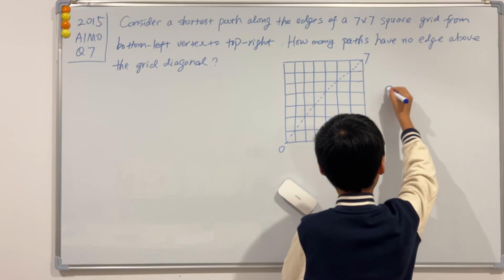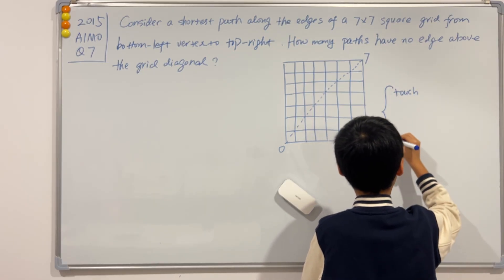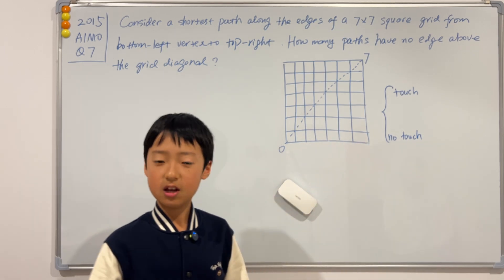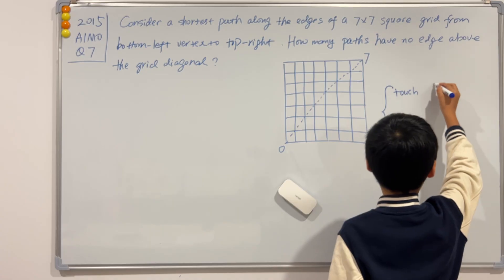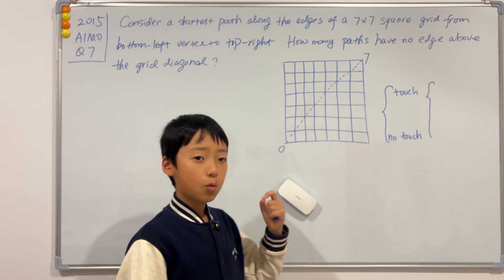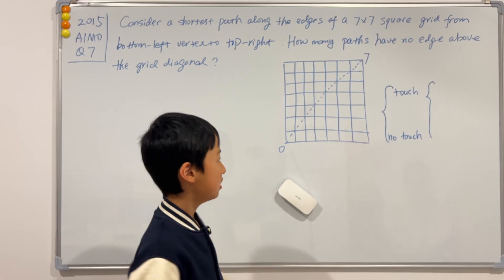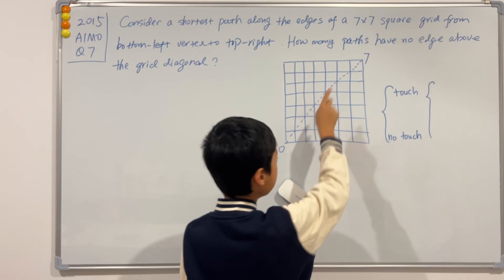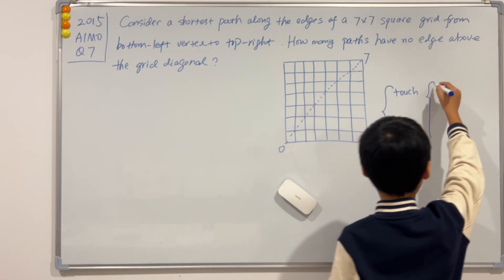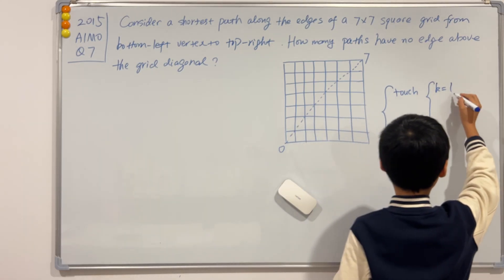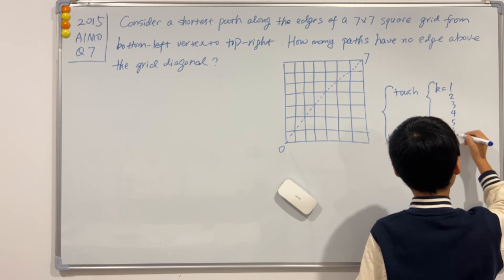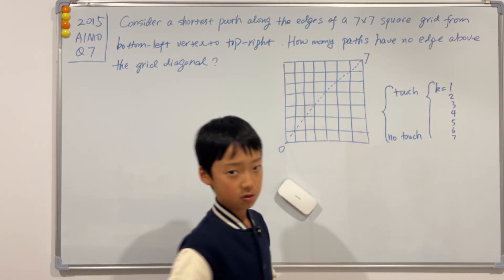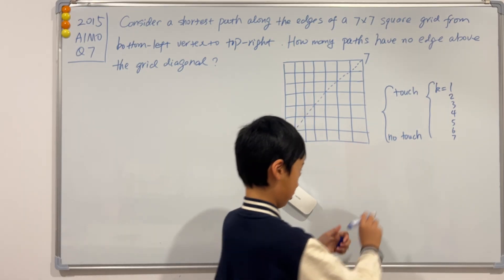If I split the cases into touch or no touch, we see that in the touch case there are actually cases inside. Where can we touch on this diagonal for the first time? We can touch dot 1, dot 2, dot 3, all the way to dot 7. If we define k to be the first time it touches the diagonal, k can be 2, 3, 4, 5, 6, or 7. If k equals 7, that's actually equivalent to no touch, because 7 is the very end — so we can just cross this out.